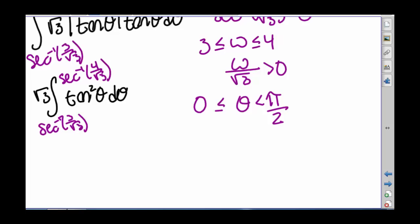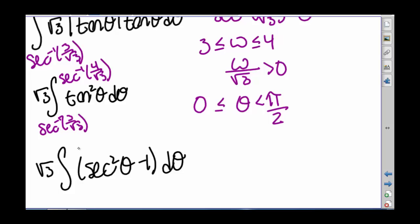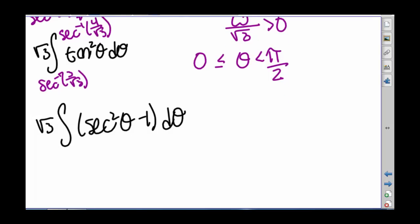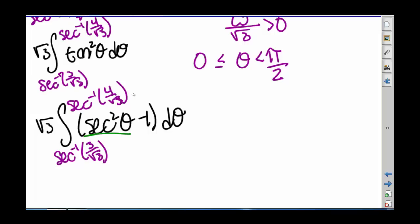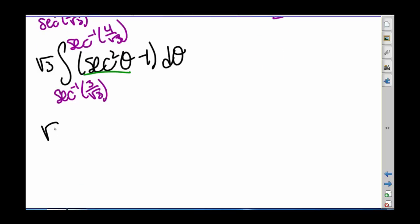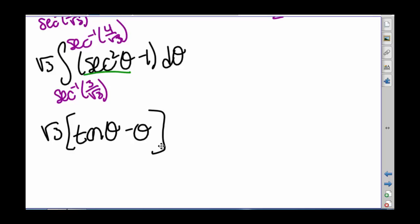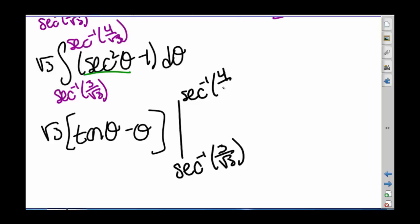We're going to rewrite tangent squared theta as secant squared theta minus 1, because hopefully you'll recognize that the integral of secant squared theta is tangent of theta. So we have square root of 3 times tangent of theta minus theta, evaluated from the inverse secant of 3 divided by square root of 3 to the inverse secant of 4 divided by square root of 3.